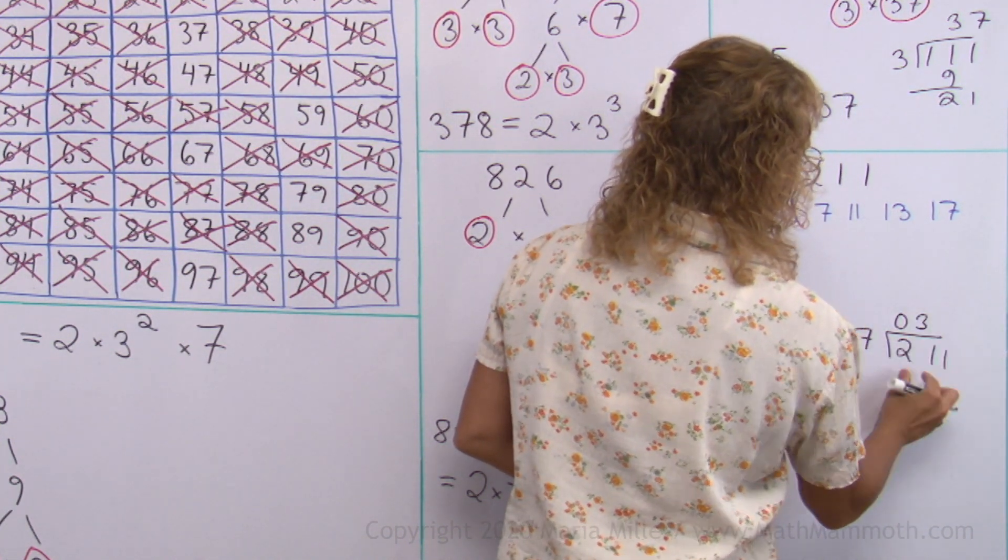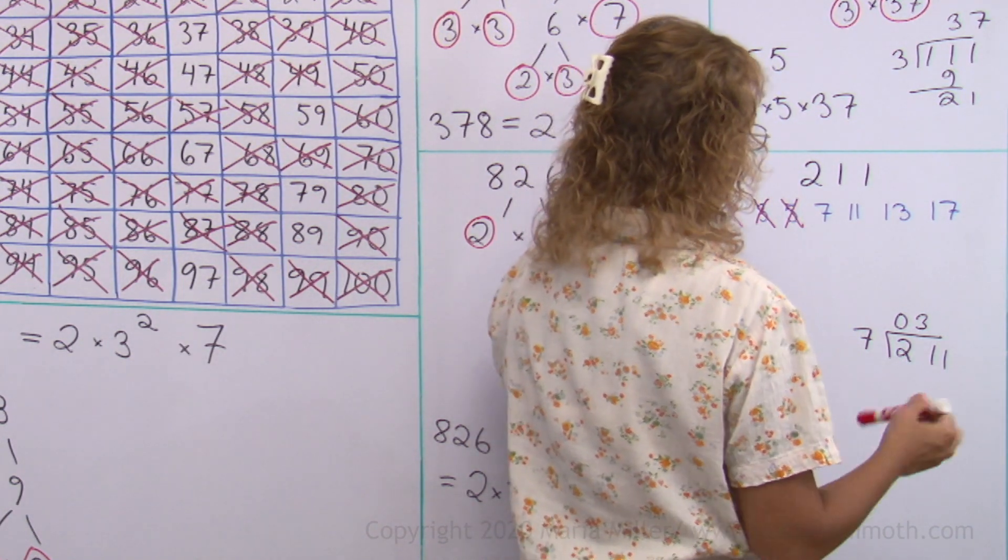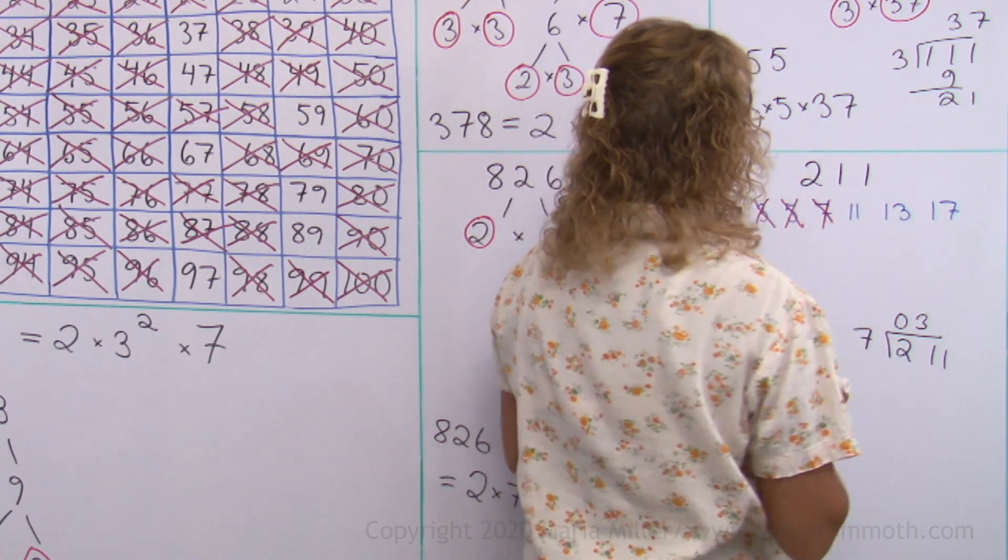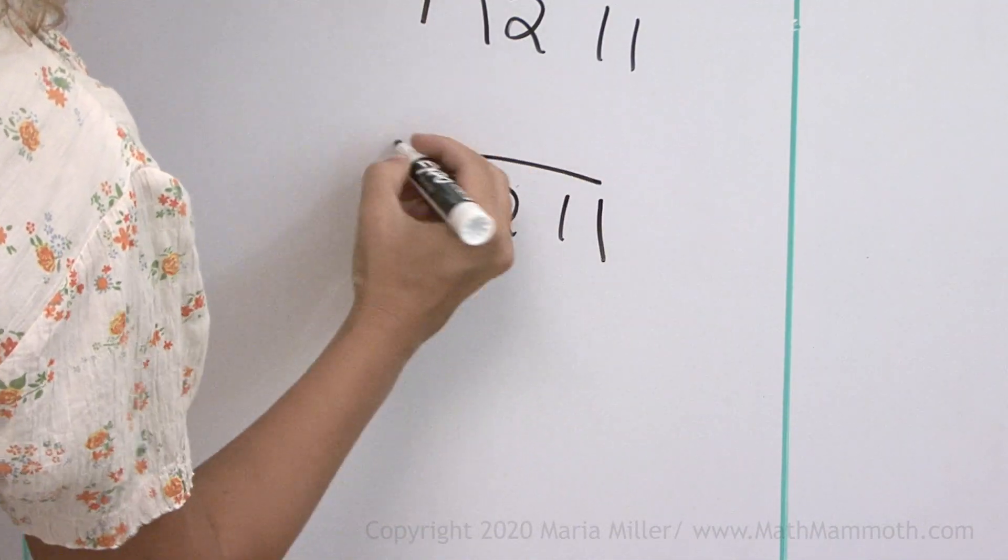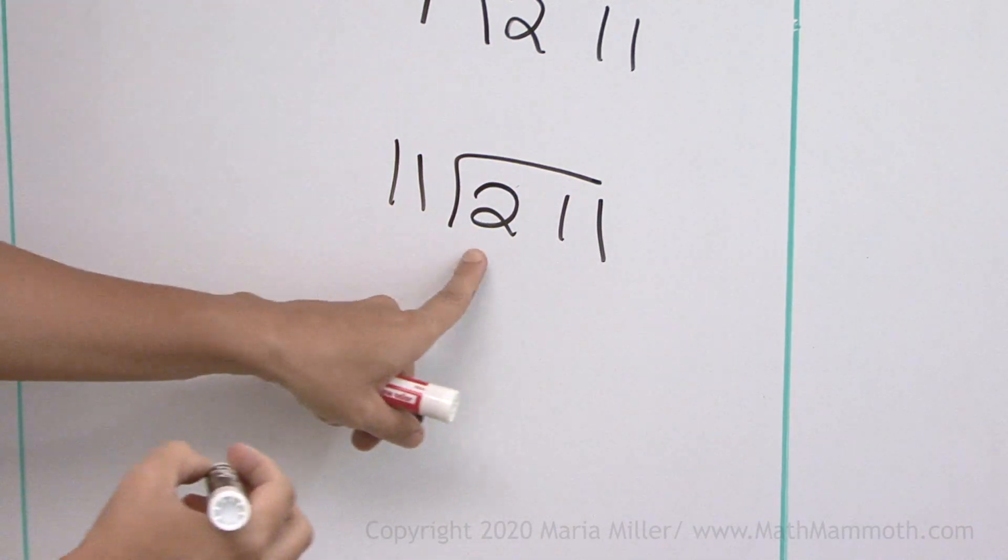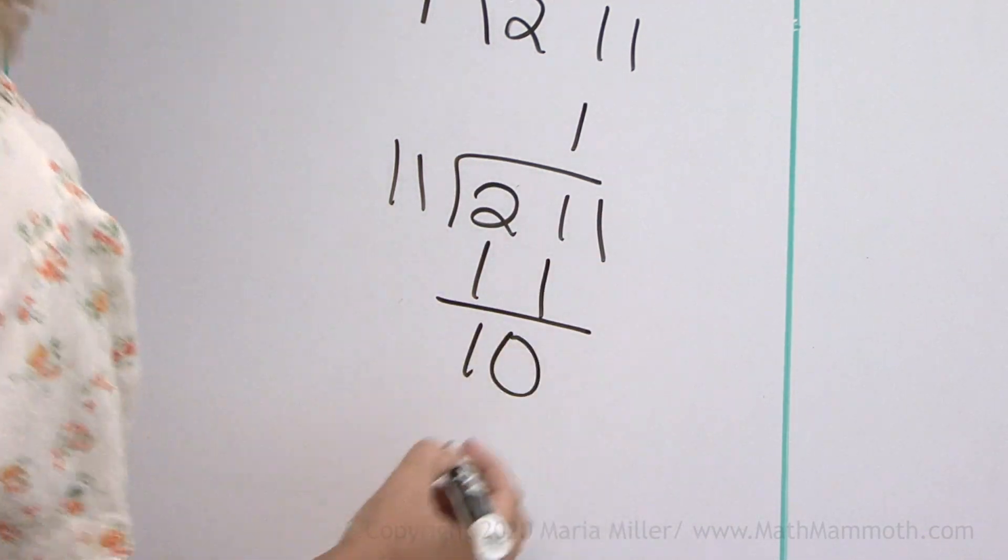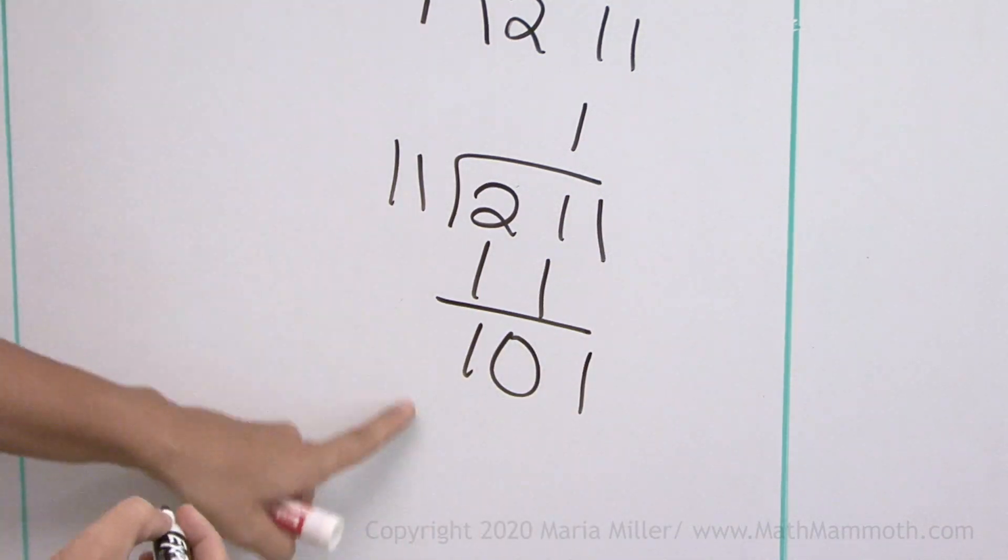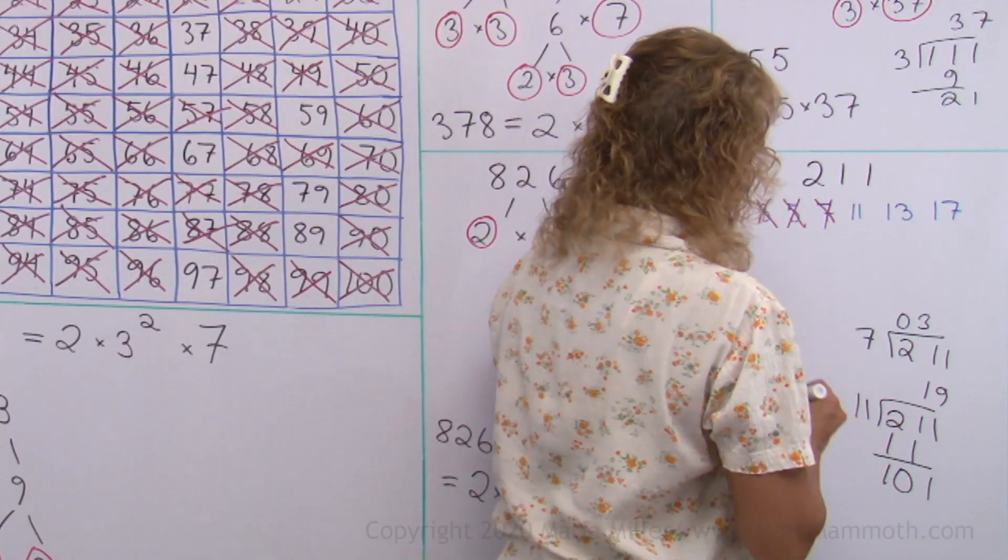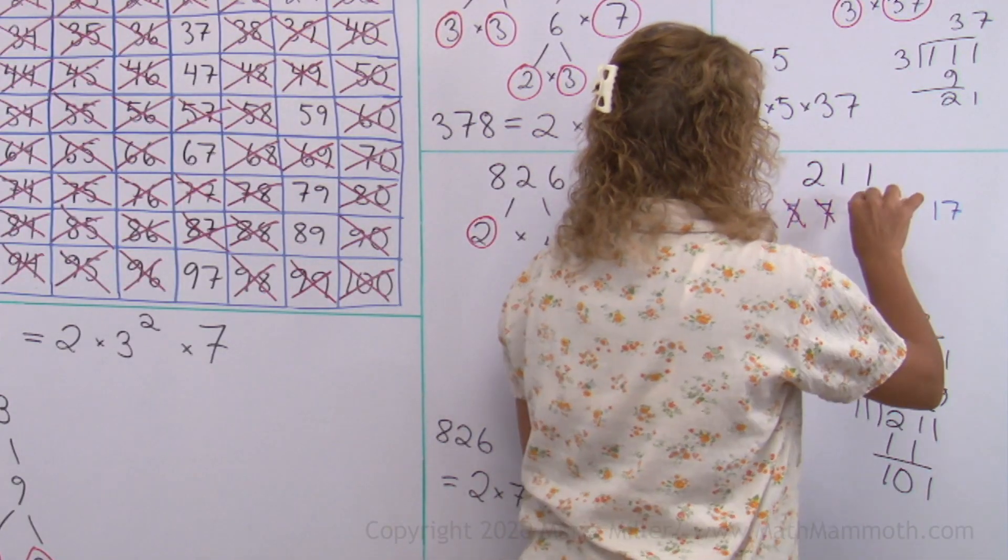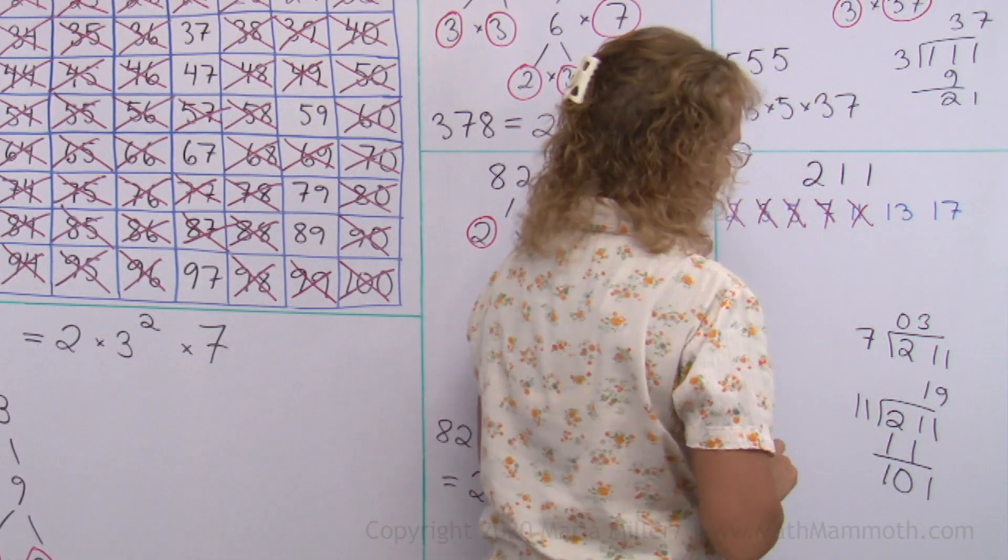It goes evenly to 21, but then it cannot go evenly to 1, so it is not divisible by 7. And then try it with 11. 11 goes into 21 once. Subtract 10. 11 goes into 101 nine times, but I can see it's not going to be an even division, so it's not divisible by 11. Notice it is 11 times 19 point something.